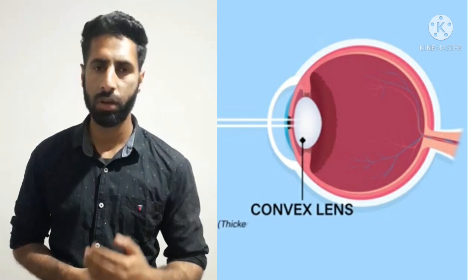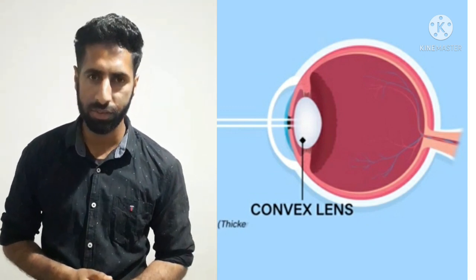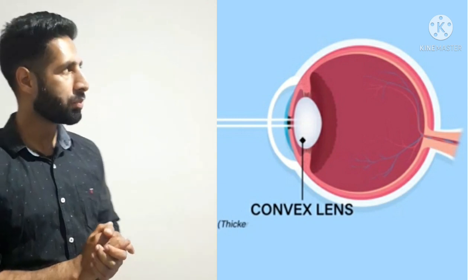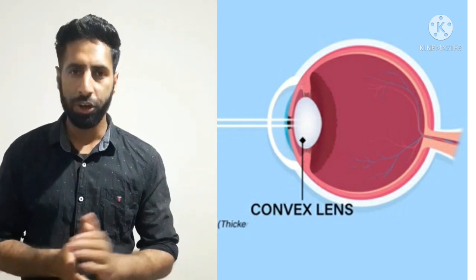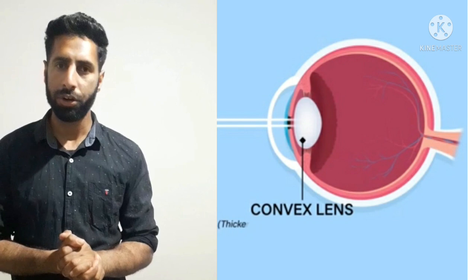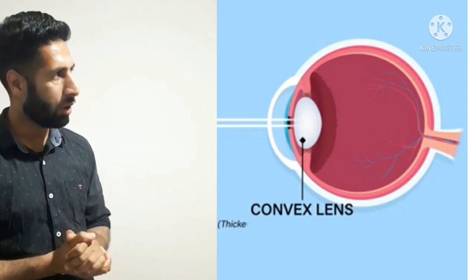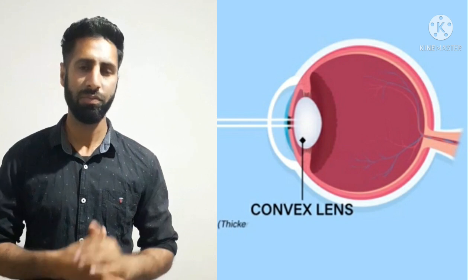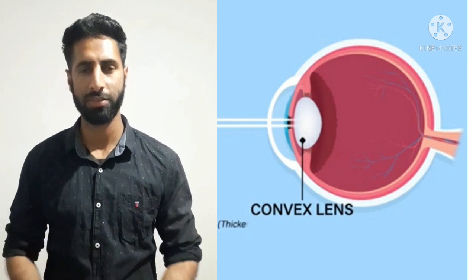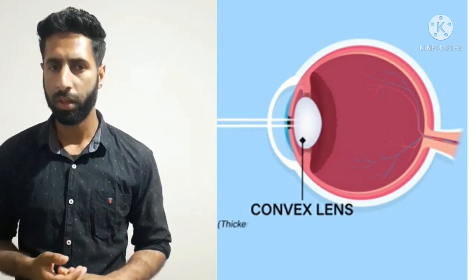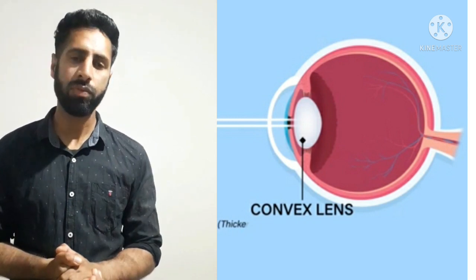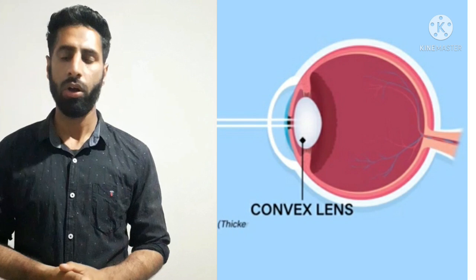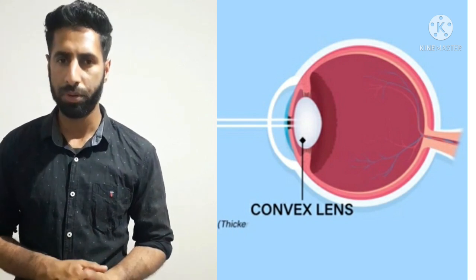Another part of the vascular tunic is the eye lens. This is a double convex lens made of proteins and water. It has a varying focal length, which is varied with the help of ciliary muscles. The function of the eye lens is to converge the light rays on the retina where the image is formed.